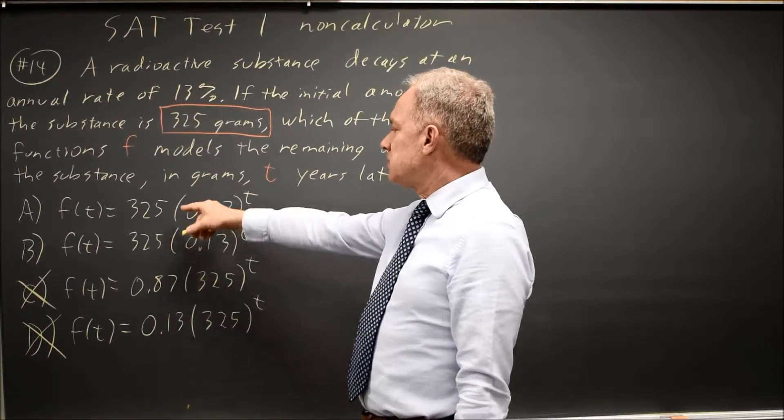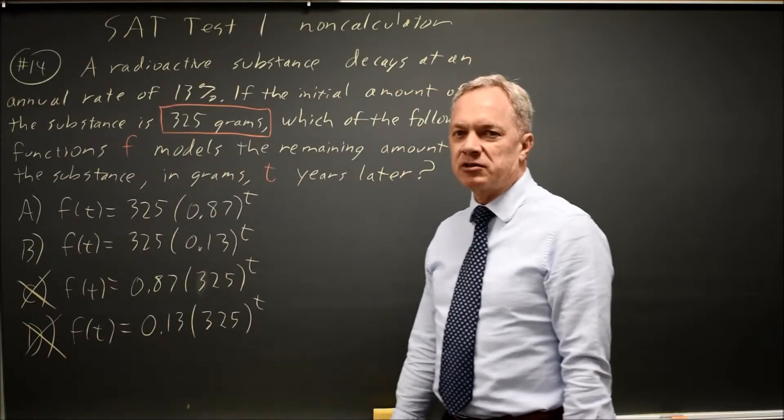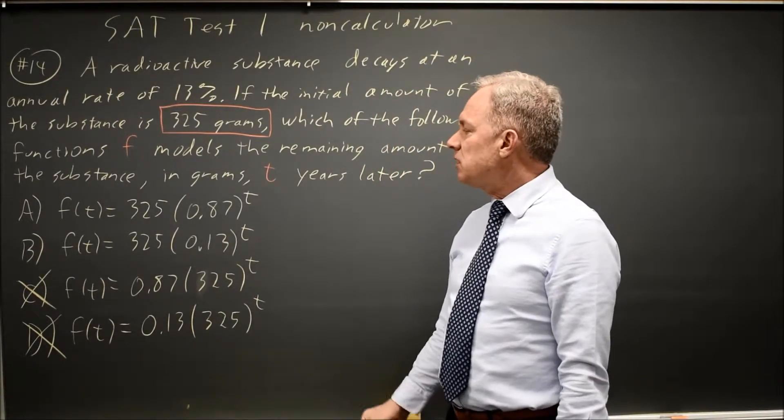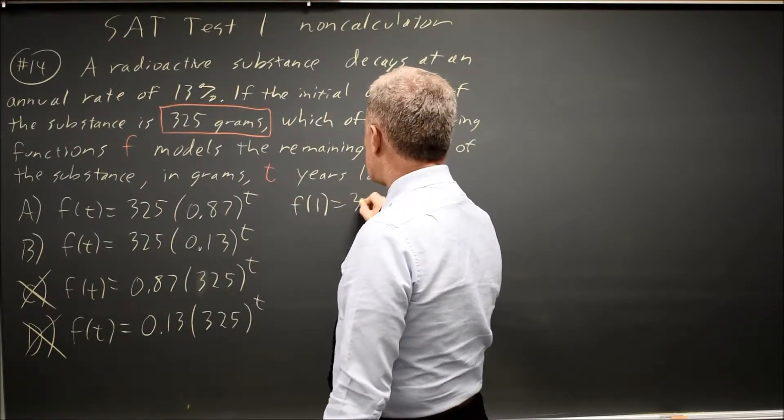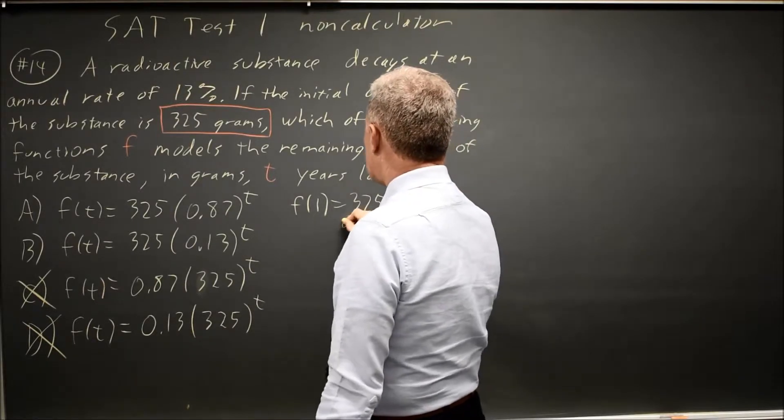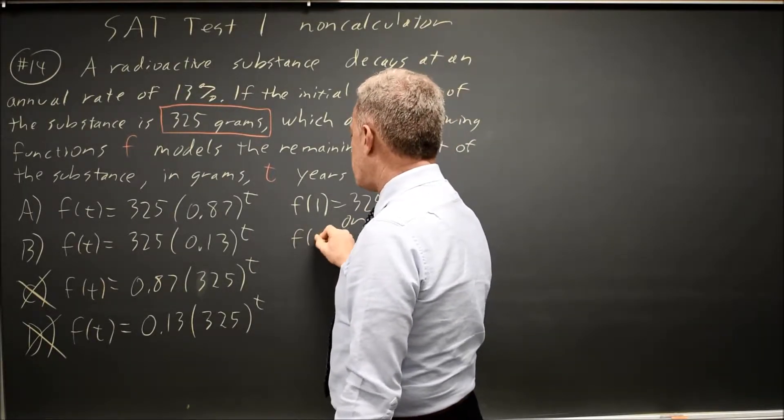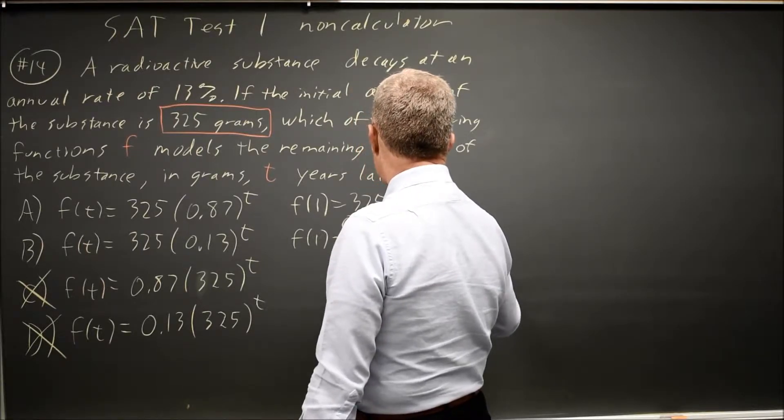Now they're asking, is it A or B, since those two start with the correct amount of our radioactive substance. At t equals 1, I get f of 1 equals 325 times 0.87 for choice B, or f of 1 equals 325 times 0.13.